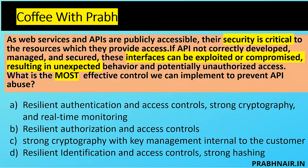Next coffee shot: web services and APIs are publicly accessible, and their security is critical to the resources they provide access to. If APIs are not correctly developed, managed, and secured, these interfaces can be exploited or compromised, resulting in unexpected behavior and potentially unauthorized access. What is the most effective control we can implement to prevent API abuse? APIs are used heavily in the cloud for automation. From the exam point of view, remember: REST is used when bandwidth is an issue and a lightweight approach is needed, but when bandwidth is not an issue and security is primary with XML-based requirements, we use SOAP — and SAML is used alongside SOAP.